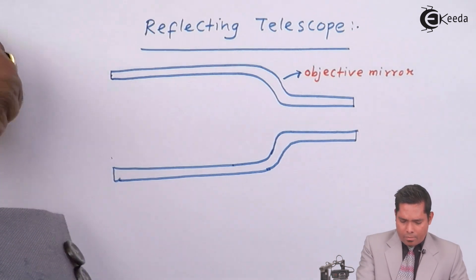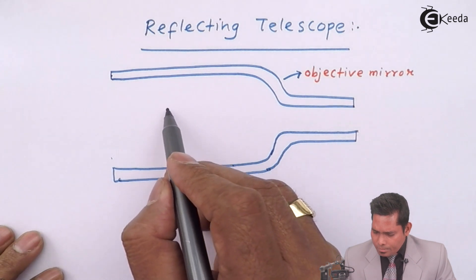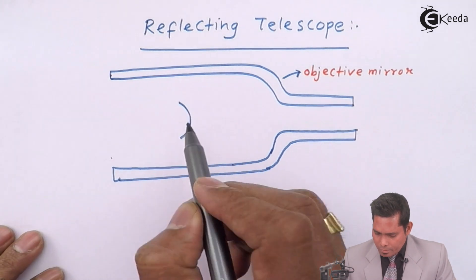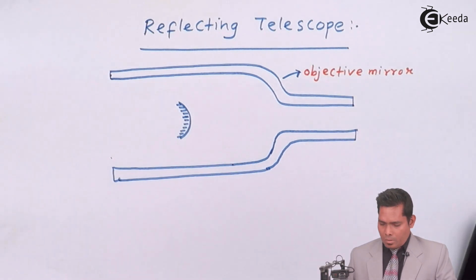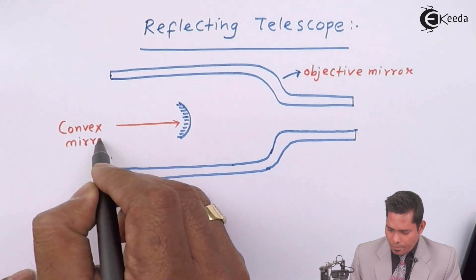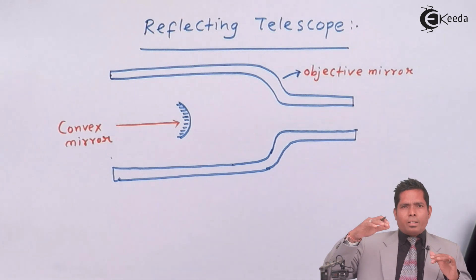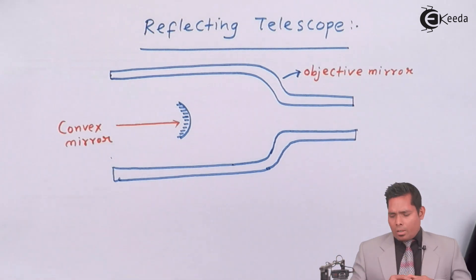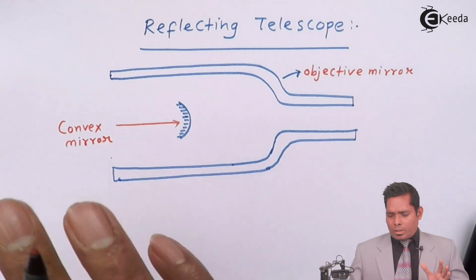And we have a secondary mirror over here which is a convex mirror. So there are two mirrors: one is objective mirror, another is convex mirror.